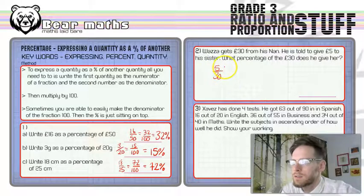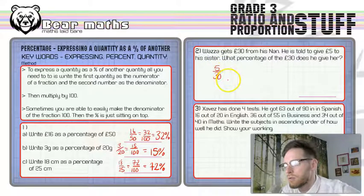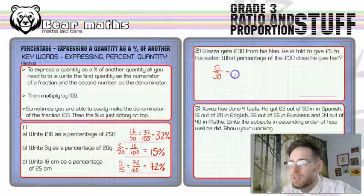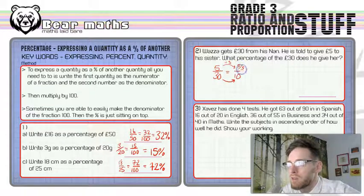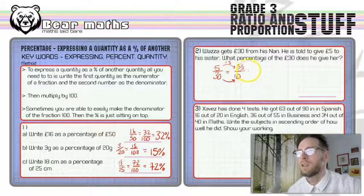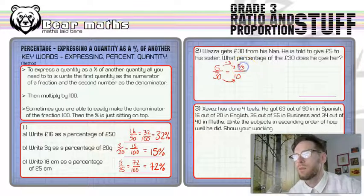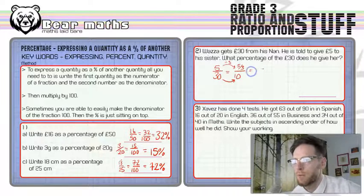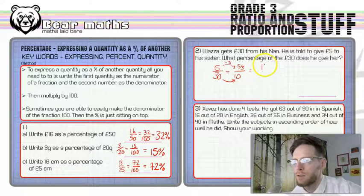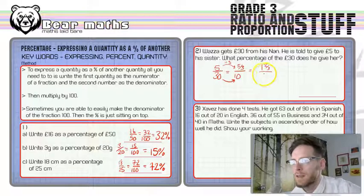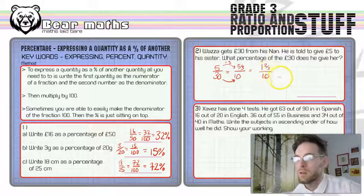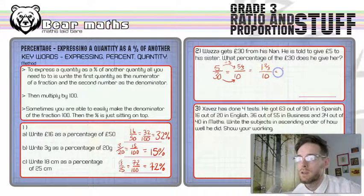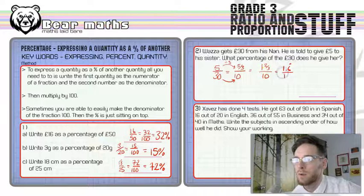Now, we can't make 30 nicely into 100, but we can make it out of 10. But that means we have to divide by 3, and if we divide by 3, we're getting 5 thirds, which is not nice. But we can deal with that without a calculator. Because that's 1 and 2 thirds out of 10. And if you know what 2 thirds is, you know it's 0.6 recurring as a decimal. So that's 1.6 recurring as a decimal out of 10.